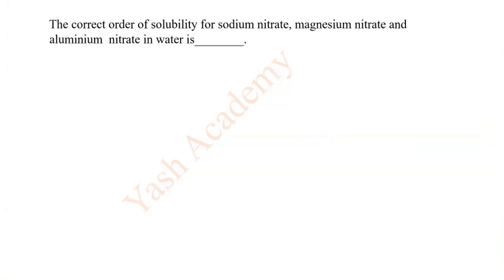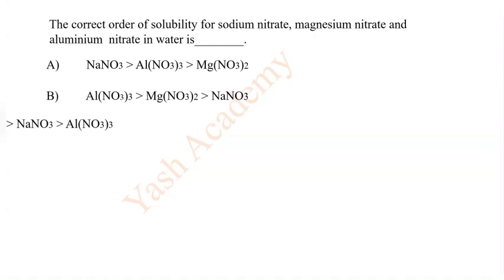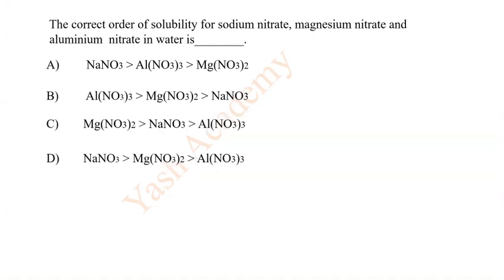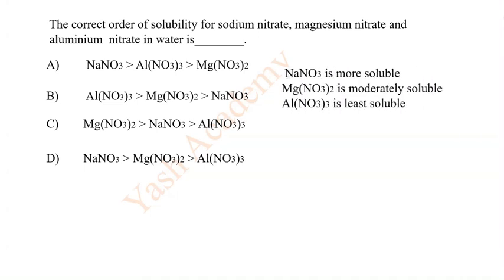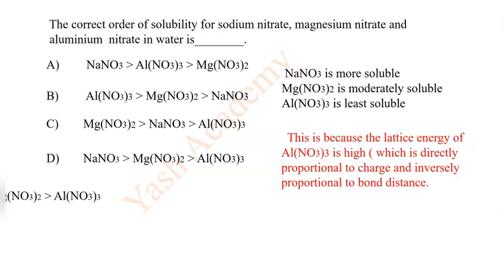The correct order of solubility for sodium nitrate, magnesium nitrate and aluminium nitrate in water is options A, B, C and D. Here solubility of these salts is given in decreasing order. So NaNO3 is more soluble, Mg(NO3)2 is moderately soluble, Al(NO3)3 is least soluble. So correct answer is D.